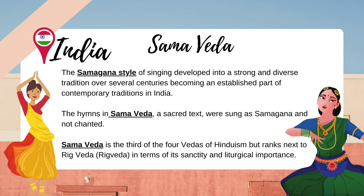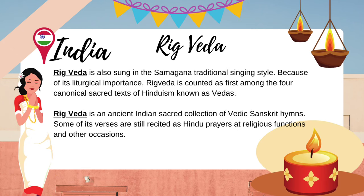Samaveda is the third of the four Vedas of Hinduism but ranks next to Rig Veda in terms of its sanctity and liturgical importance. Rig Veda is also sung in the Samagana traditional singing style because of its liturgical importance. Rig Veda is counted as first among the four canonical sacred texts of Hinduism known as Vedas. It is an ancient Indian sacred collection of Vedic Sanskrit hymns, and some of its verses are still recited as Hindu prayers at religious functions and other occasions.